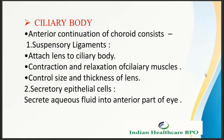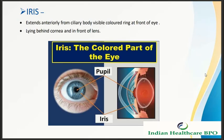The ciliary body is the anterior continuation of the choroid and consists of suspensory ligaments that attach the lens to the ciliary body. Contraction and relaxation of the ciliary muscles control the size and thickness of the lens. Secretory epithelial cells secrete aqueous fluid into the anterior part of the eye.